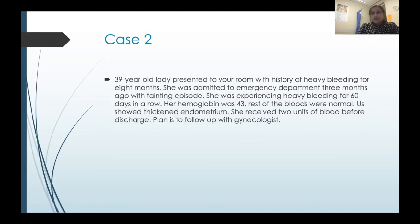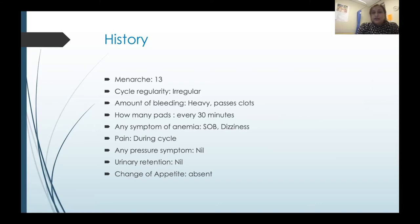Case two: a 39-year-old lady with eight months of heavy bleeding. She was admitted to the emergency department three months ago with a fainting episode, and at that time she had been bleeding for 60 days in a row. Her hemoglobin was 43, coagulation profile normal, not pregnant. Emergency ultrasound showed a thickened endometrium. She received two units of blood and was discharged to see a gynecologist as an outpatient. Her detailed history: menarche at 13, always irregular and heavy with clots, but she thought it was normal. Recently the bleeding had become much heavier, needing pad changes every 30 minutes, with shortness of breath and dizziness. She had excruciating pain passing clots. No pressure symptoms, no urinary retention.